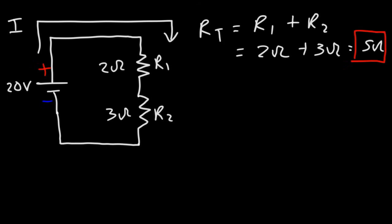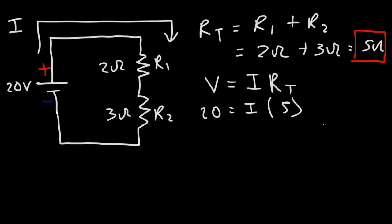To calculate the current flowing in a circuit we use the voltage of the battery and Ohm's law: V equals IR. The voltage of the battery is 20 and the total resistance is 5. 20 divided by 5 is 4, so the current flowing in the circuit is 4 amps.